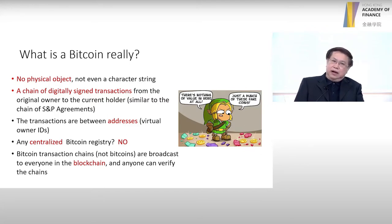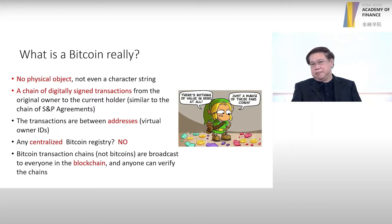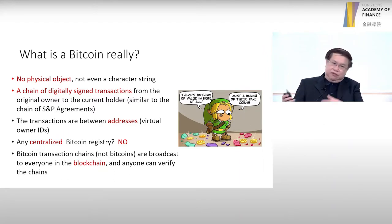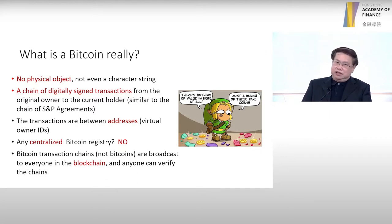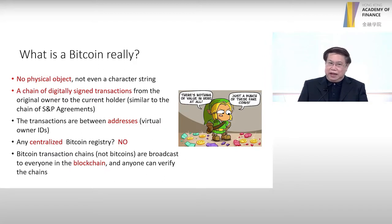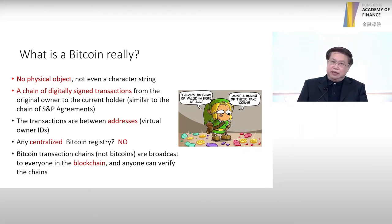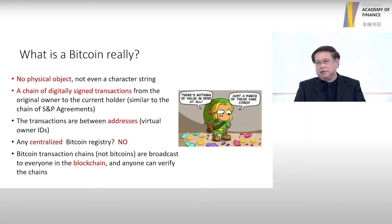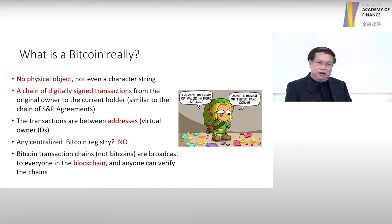Number two: who are the participants of these transactions? All these transactions are just between addresses — they are virtual owner IDs. For example, I receive a Bitcoin from Henry — it's actually my virtual address receiving a Bitcoin from Henry's virtual address. The linking between myself and my virtual address is usually unknown to everyone. That's why we always say Bitcoin is anonymous. The linking between the address and the person is only established in specific places. That's why KYC is important and AML is difficult.